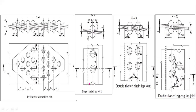This is the single riveted lap joint — single riveted means we are using one row for riveting. Here we are riveting two rows, so this is the double riveted chain lap joint. This is the double riveted zigzag lap joint. These two are the double riveted lap joints.